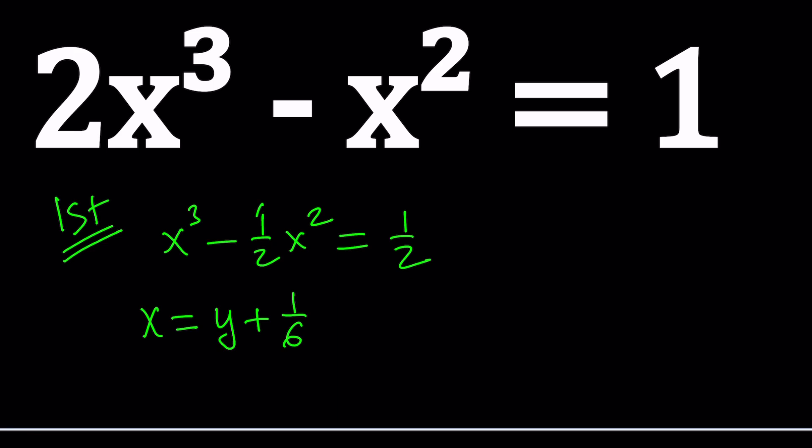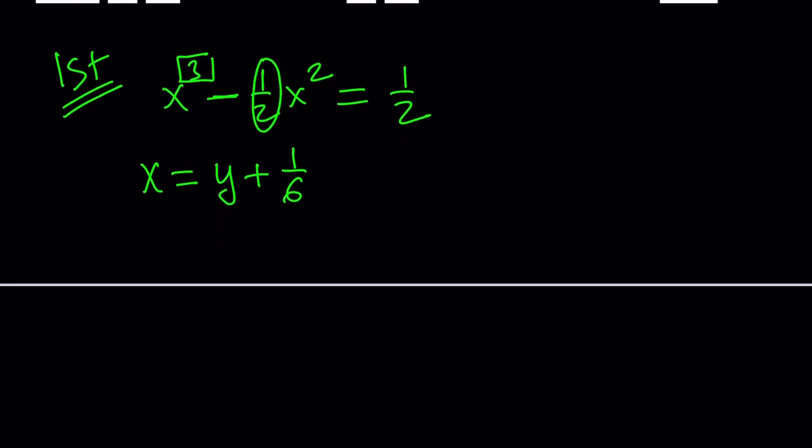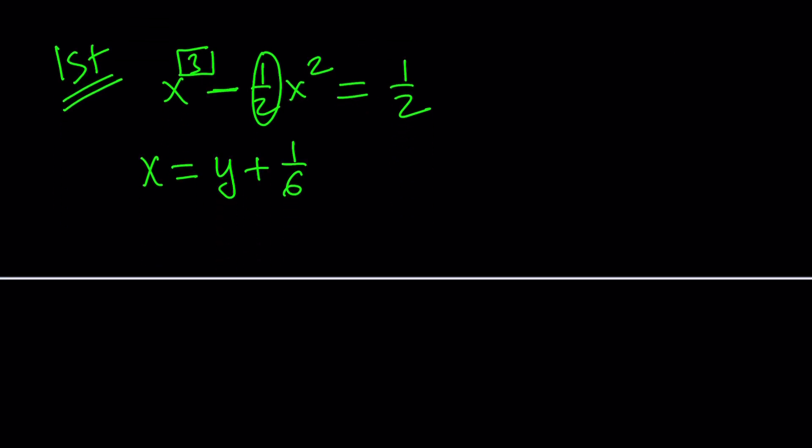You take the coefficient of x squared, of course with the minus sign. You negate it, which gives you 1 half. And then you divide that by 3, which is the degree of this polynomial. Does that make sense? Take the coefficient, negate it, divide by 3. Then you get this number. And a variable added to that number will give you x. So if you replace x with y plus 1 over 6, here's what happens.